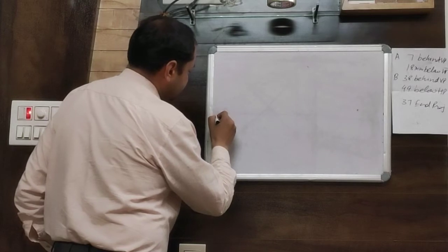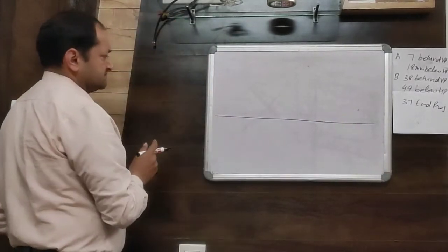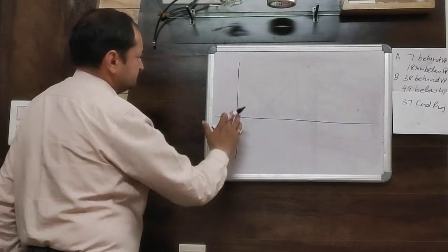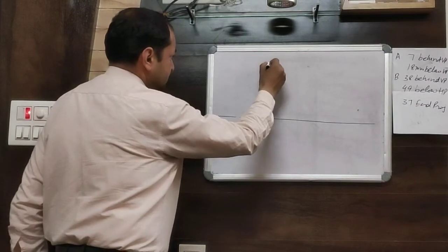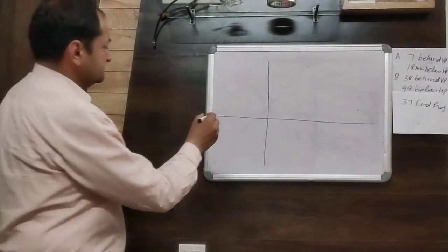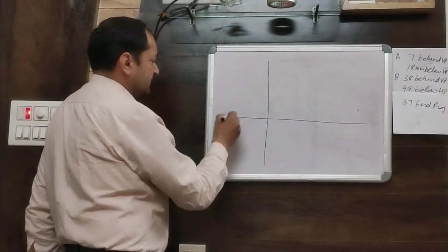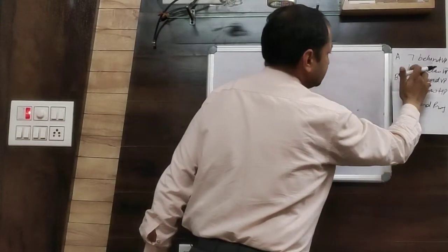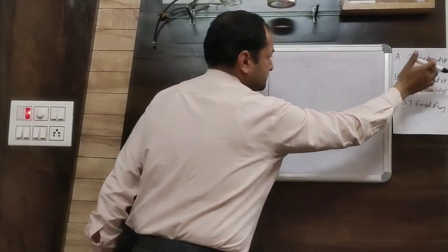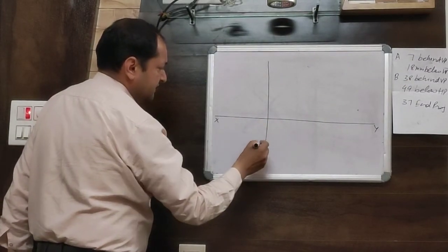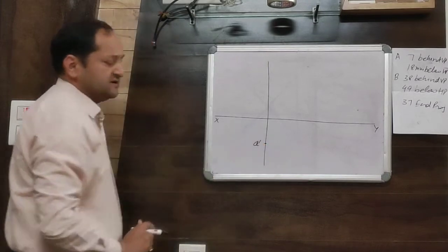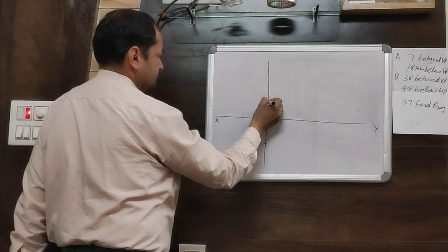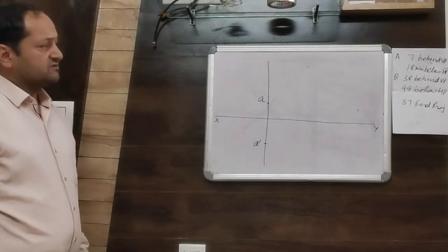First of all, draw a reference line XY. Then draw a projection line. On this projector line, take point A and mark its front view and top view. The front view will be 18 mm below HP, meaning 18 mm below the reference line. The top view will be 7 mm behind VP.